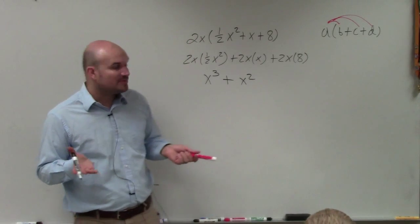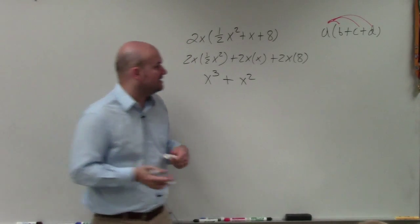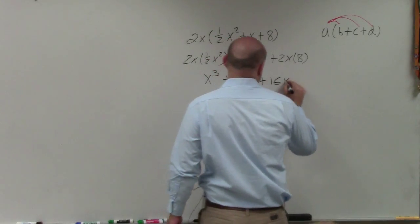And then here I can only multiply the numbers and I'm just going to have x. So 2 times 8 is going to be 16, and then times x is 16x.